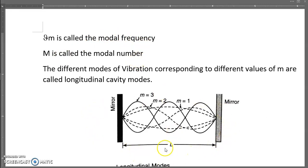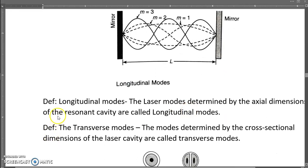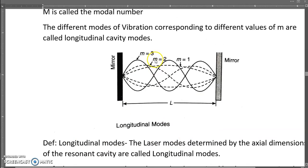You can see in the diagram here that there are different modes of vibration. Longitudinal mode is determined by the axial dimension of the resonant cavity.